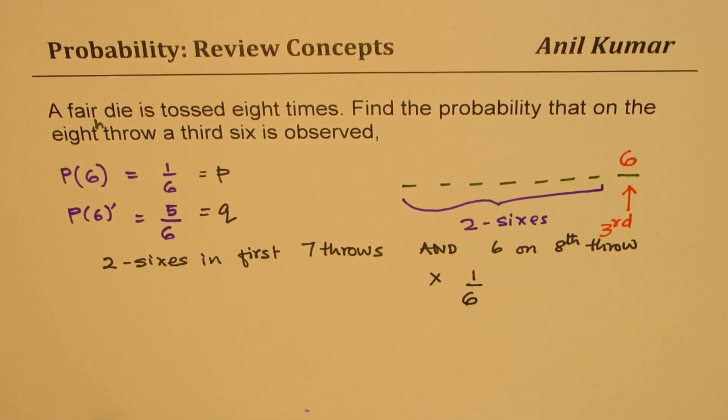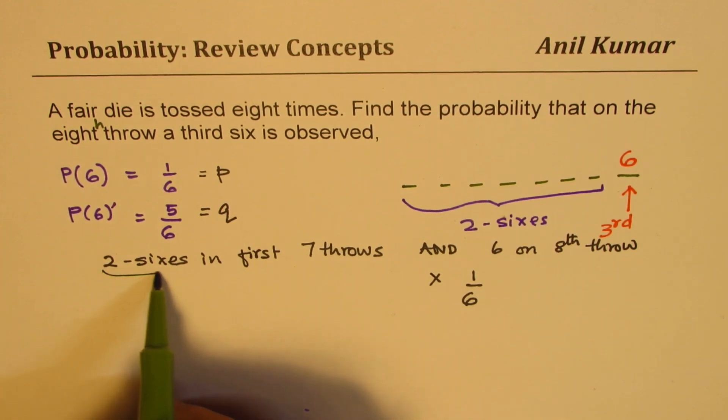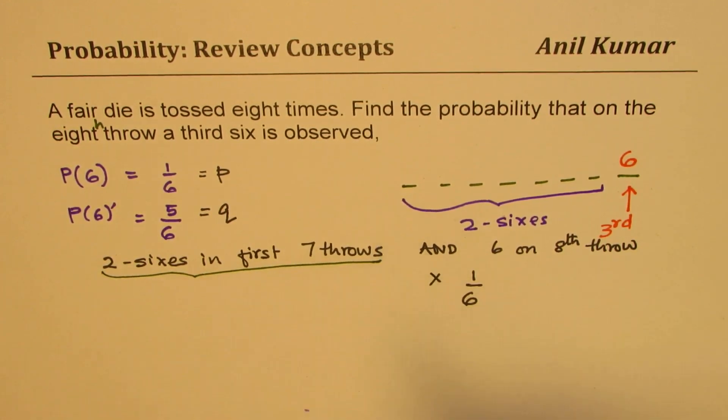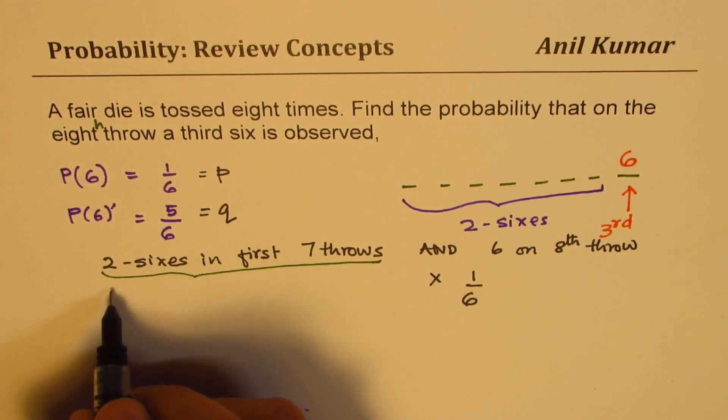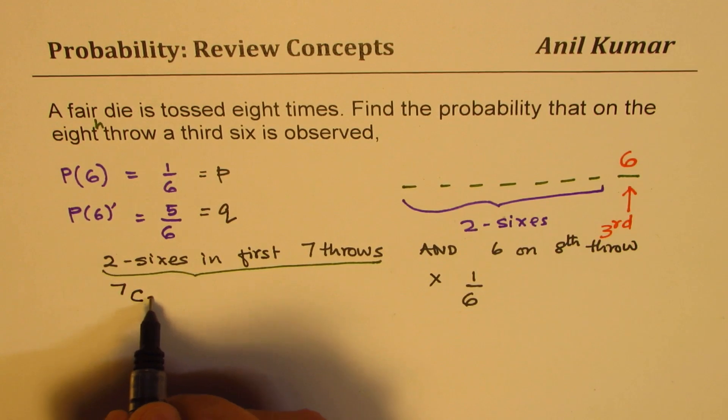Correct? Now two sixes in the first seven throws. What is the probability of that? So you can use the knowledge of binomial distribution which you learned. So out of seven throws, we want two sixes, right?